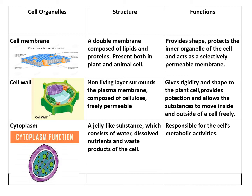Next is cytoplasm. All the parts inside the cell, inside the plasma membrane, excluding the nucleus, together constitute the cytoplasm. It is a jelly-like substance which consists of water, dissolved nutrients, and waste products of the cell. The cytoplasm is responsible for the cell's metabolic activities, and the earlier steps of respiration also occur in the cytoplasm.